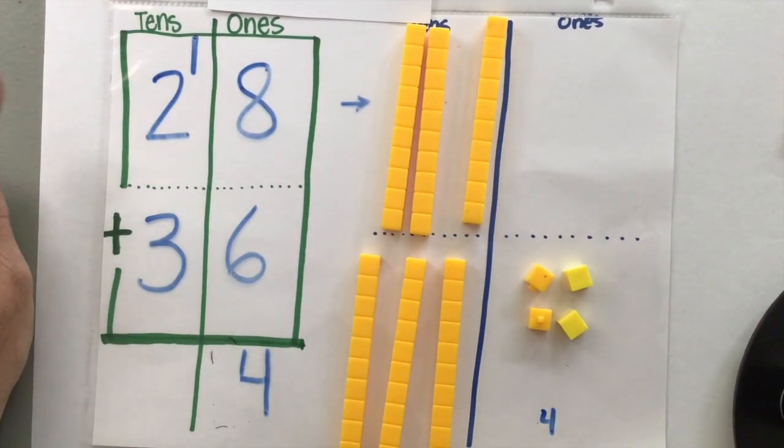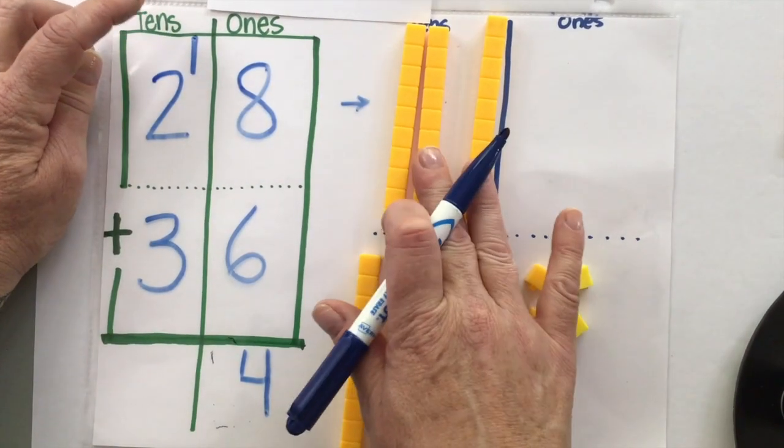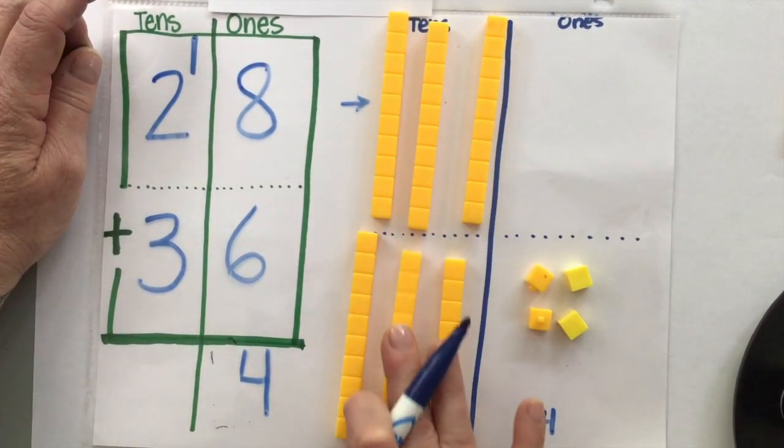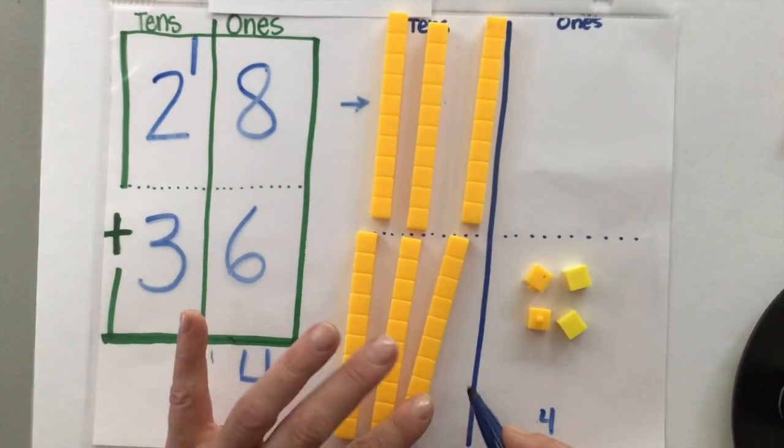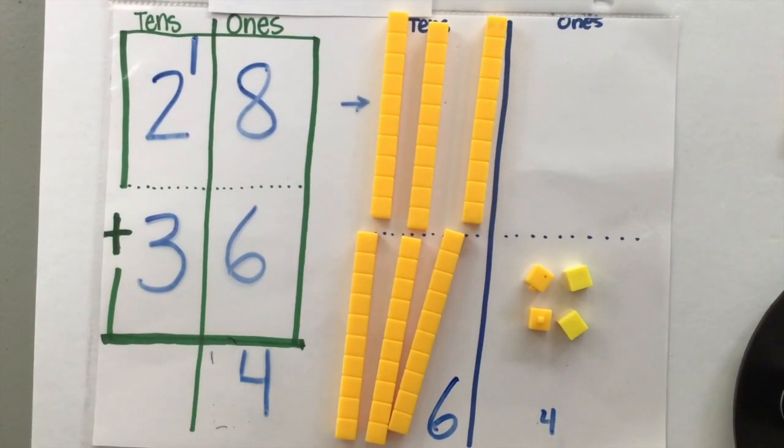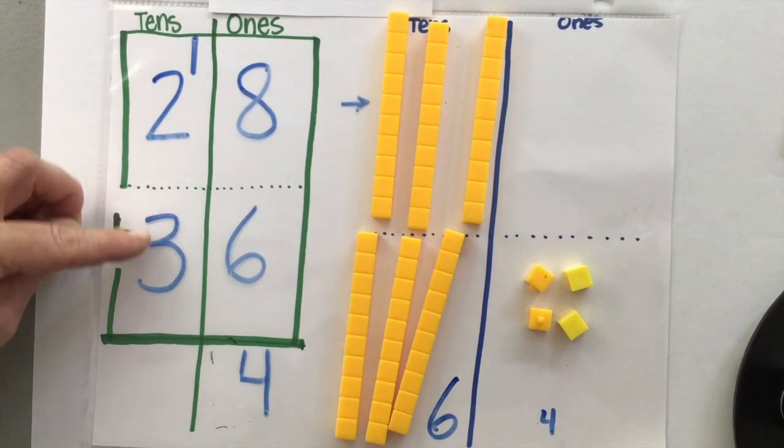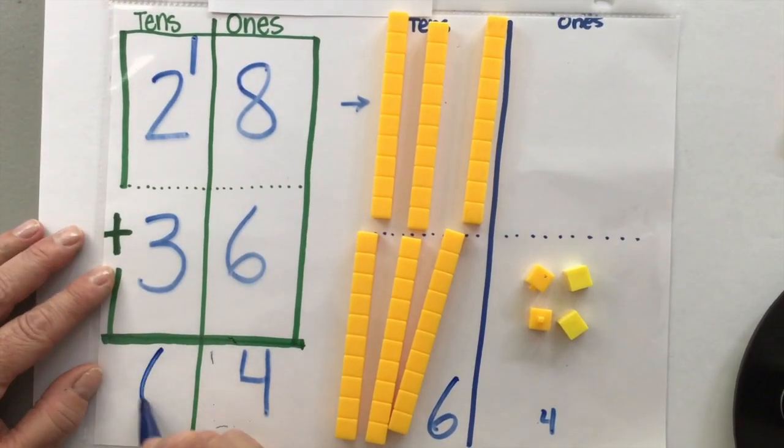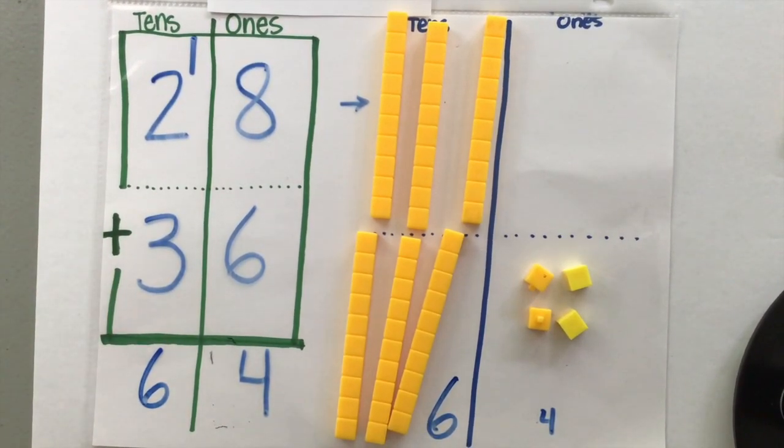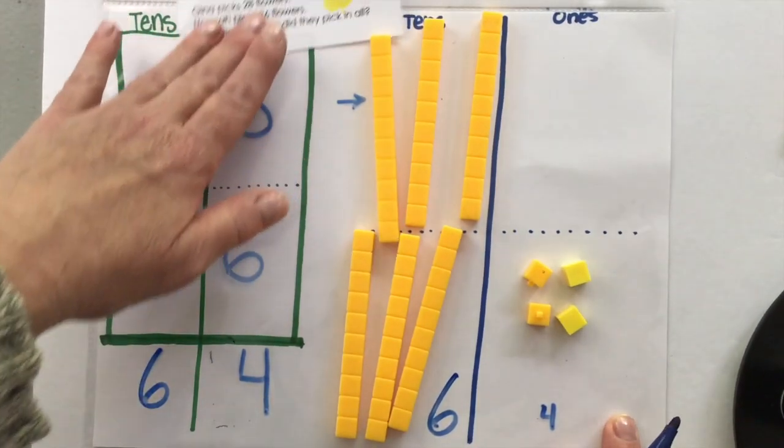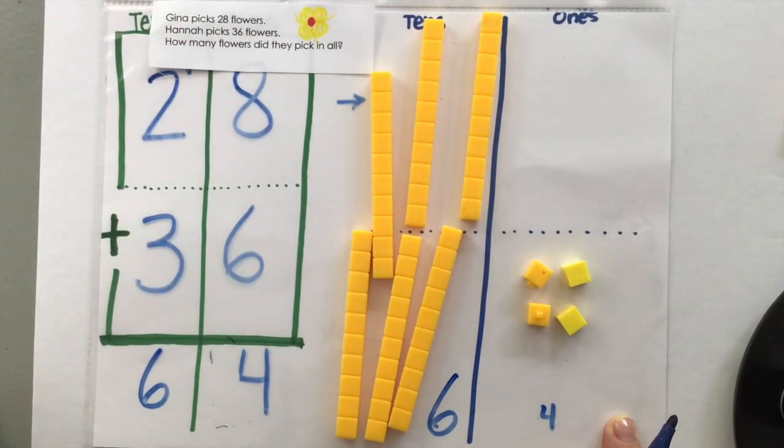So now we add our tens. One, two, three, four, five, six. I have six sets of 10 over here. So the answer to our problem is they picked 64 flowers in all.